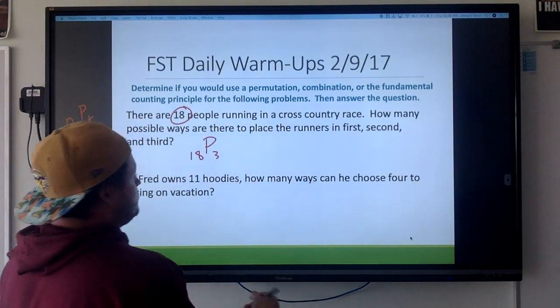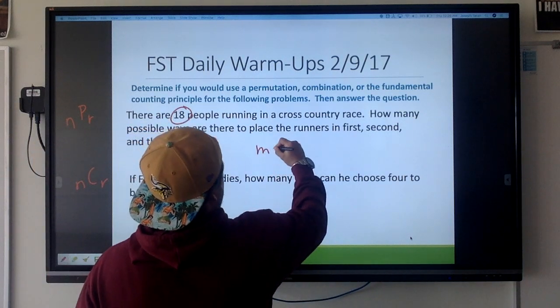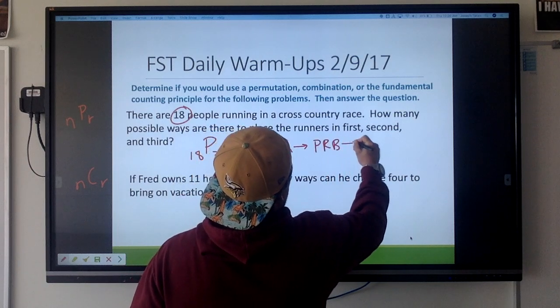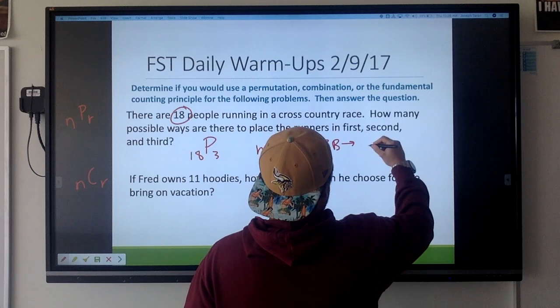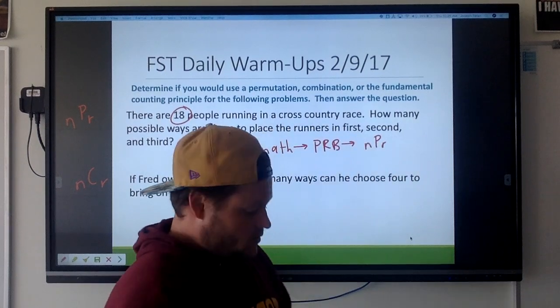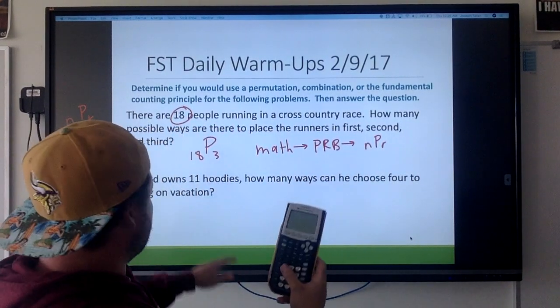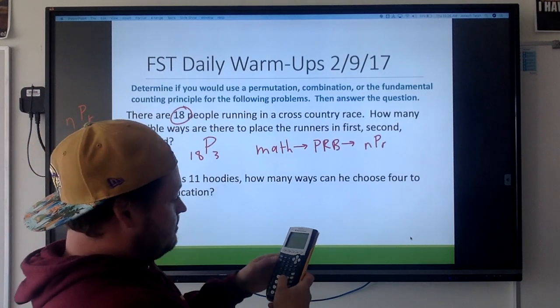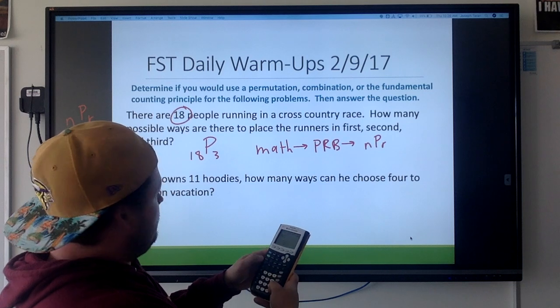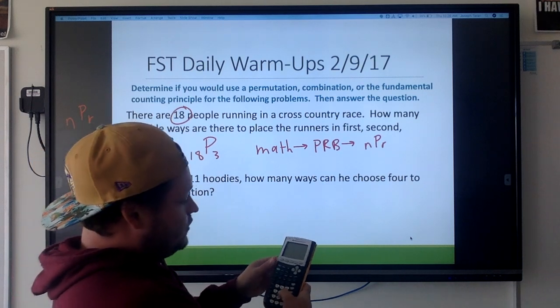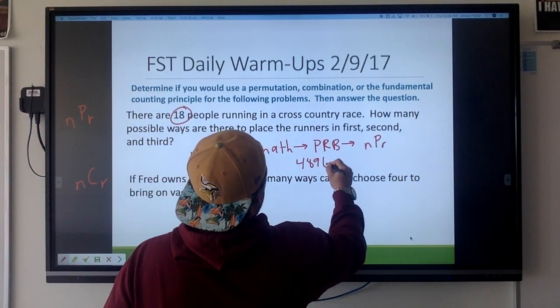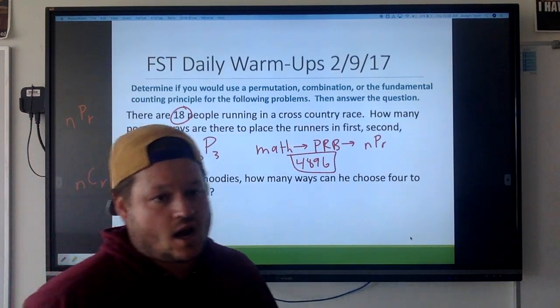So remember these steps: to do this in your calculator you're going to hit math and then you're going to go over to the PRB tab, and then you're going to scroll down for the nPr button. When you enter this in your calculator, the first thing I'm going to do is I'm going to type in 18, then I'm going to hit math, scroll over to the PRB nPr, and then I'm going to hit the three. And if you do that you should get 4,896.